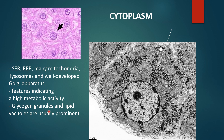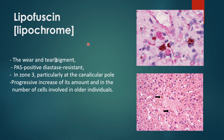Glycogen granules and lipid vacuoles are usually prominent in hepatocytes. Lipofuscin deposits, also called lipochrome, are the wear-and-tear pigment. They are PAS-positive and diastase-resistant. PAS is the periodic acid-Schiff stain used to stain the glycol component of cells. Lipofuscin is present particularly in zone 3 at the canalicular pole, with a progressive increase in amount and number of cells involved in older individuals.